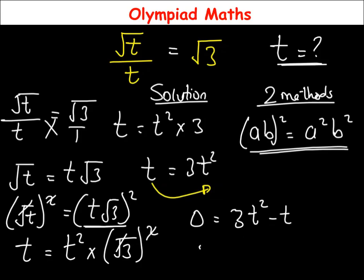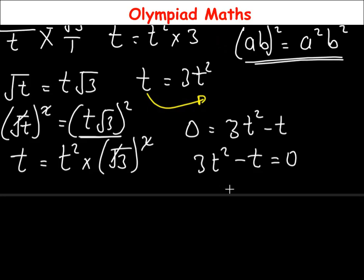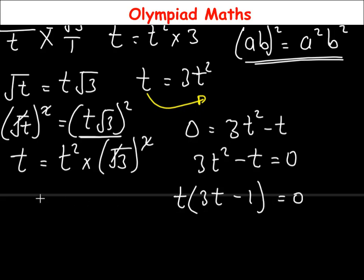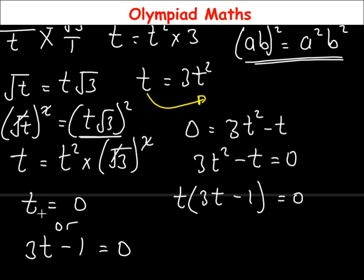Rearranging, we have 3t² minus t equals 0. To solve for t, notice that t is a common factor, so we factorize out t: t(3t minus 1) equals 0. At this junction, t equals 0, or from the second factor, 3t minus 1 equals 0.